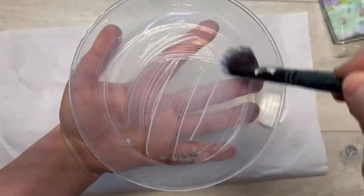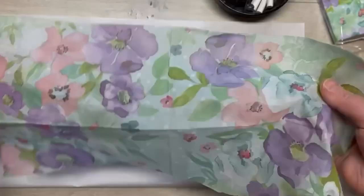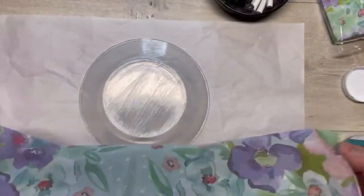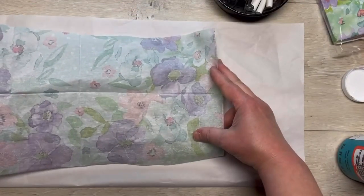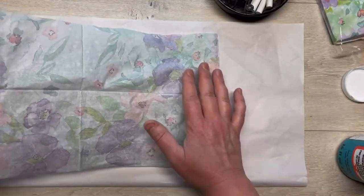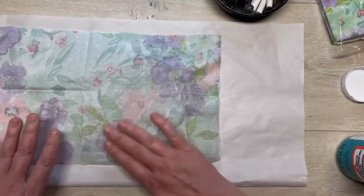Now I do a nice thin layer all over the plate and then I cut down the napkin. And then I just center it, or however you would like it, whatever flowers you like best. Put it on the plate.